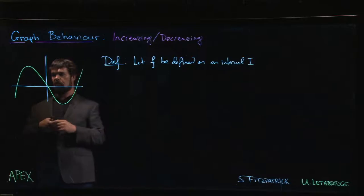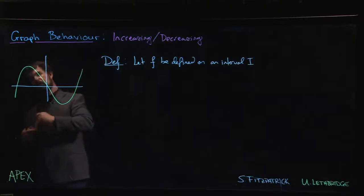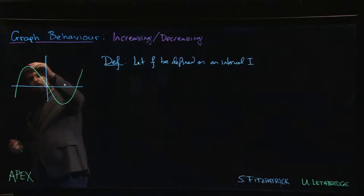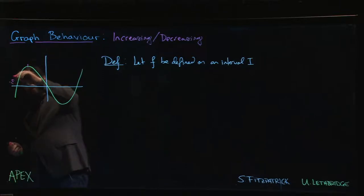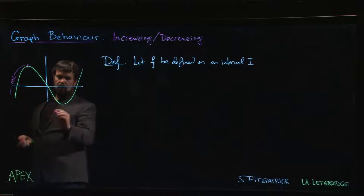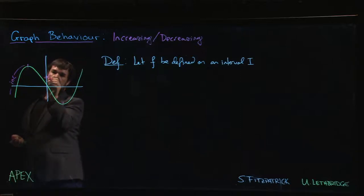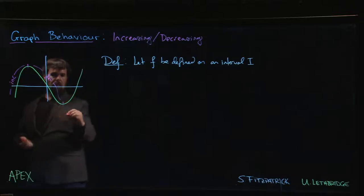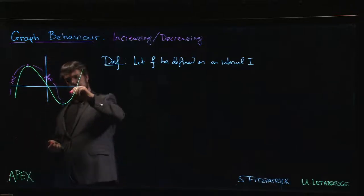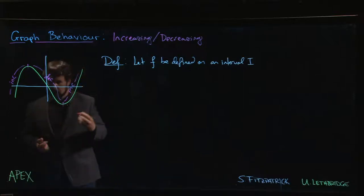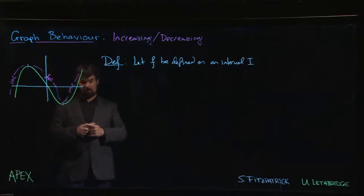So over this portion of the graph, we say the function is increasing because the values are getting bigger. From here to here, the function is getting smaller — so it's decreasing. Then again over here, the function appears to be increasing again.